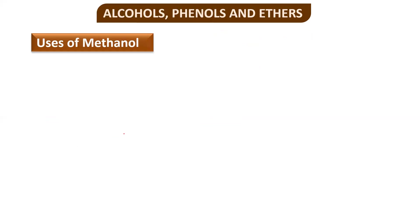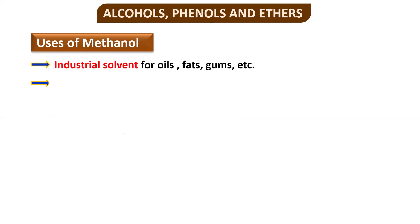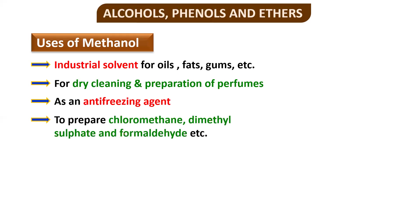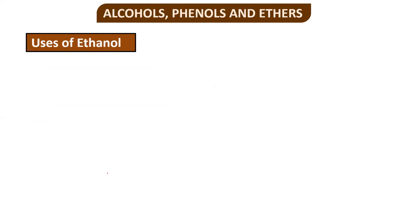The uses of methanol — this can be a direct two-mark question. Methanol is used as an industrial solvent for oils, fats, and gums. It is used in dry cleaning and preparation of perfumes. It is used as an anti-freezing agent in cold regions like Antarctica, Greenland, and Russia, where petrol or oil may freeze. It is also used to produce chloromethane, dimethyl sulfide, and formaldehyde.